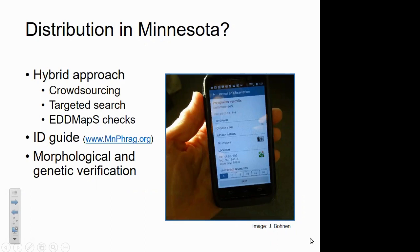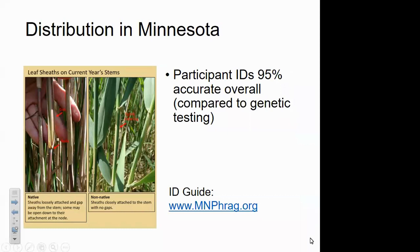We also checked records already in EDMaps, a website for reporting invasive species. We developed an identification guide using photos that Julia took of Phragmites specimens from Minnesota, and samples were sent to us for morphological identification. We also worked with partners at Chicago Botanic Garden using genetic testing as a gold standard to confirm identifications. This crowdsourcing approach was really effective — participant identifications using our ID guide were 95% accurate relative to genetic testing. You can find this identification guide at www.minfrag.org.